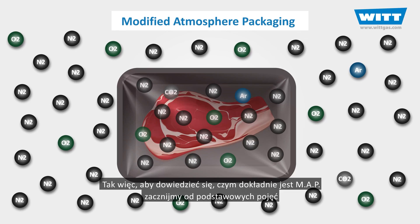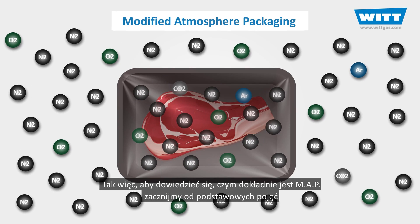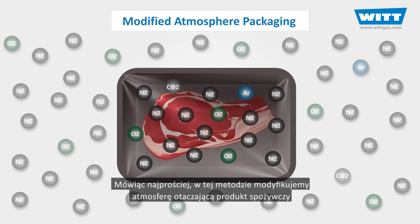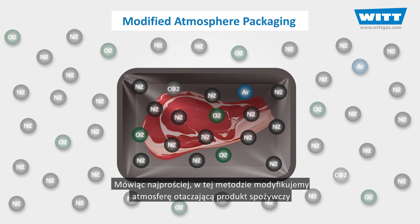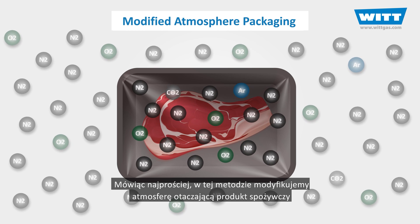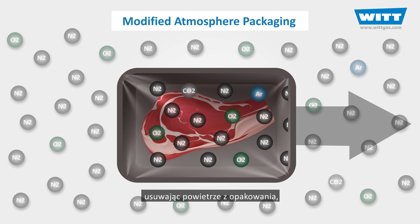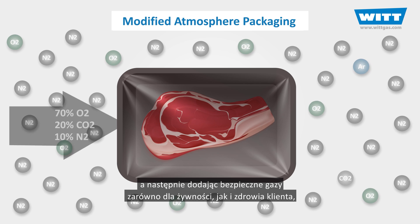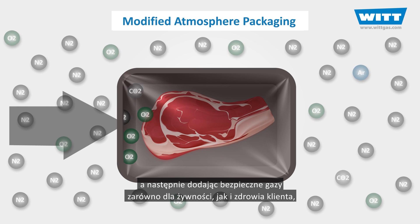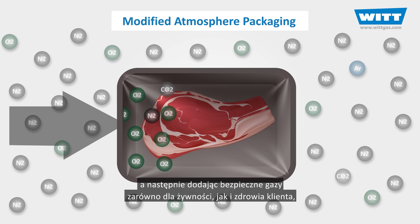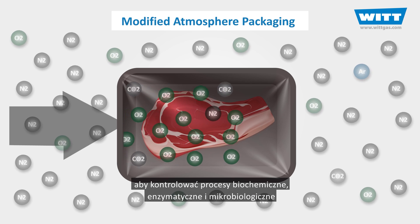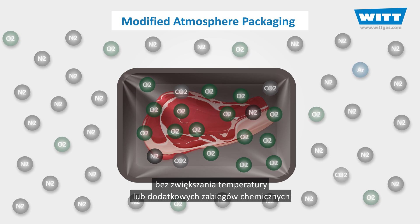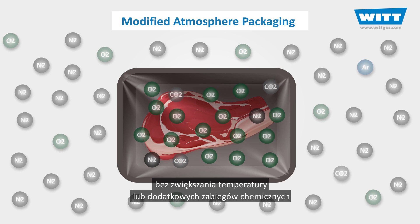To figure out what MAP exactly is, let's start with the basic concepts. Simply put, in this method we modify the atmosphere surrounding a food product by removing the air inside of its package and then adding gases that are safe for both food and customers' health, to control the biochemical, enzymatic, and microbial actions without temperature or chemical treatments.